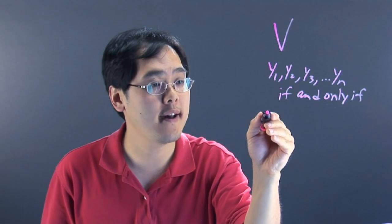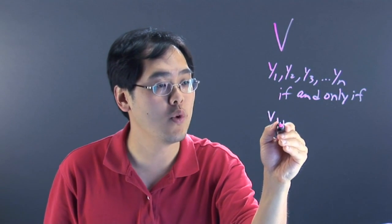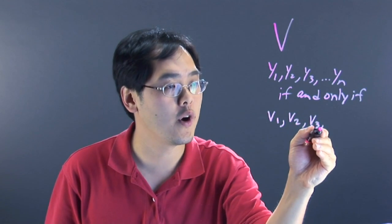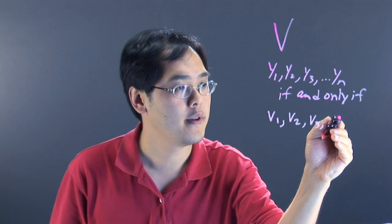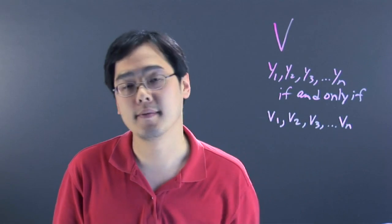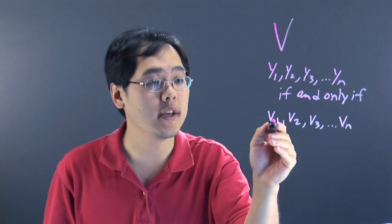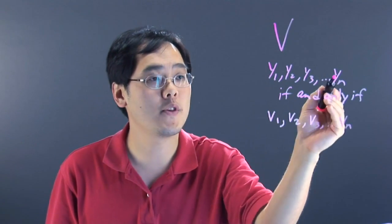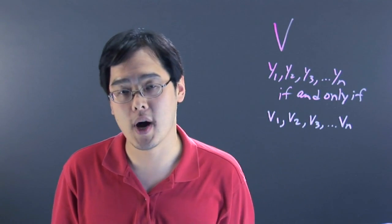So for example, if you have a vector V1, a vector V2, a vector V3, all the way down to vector Vn, that means if V1 can be written as a linear combination of the Y's, V2 can be written as a linear combination of the Y's,